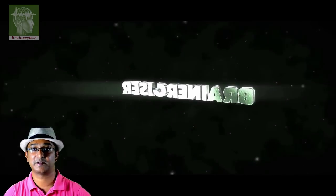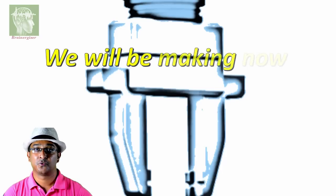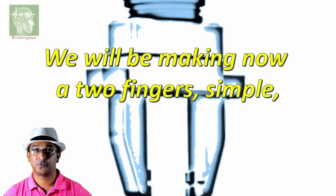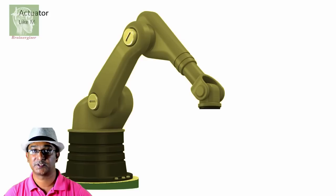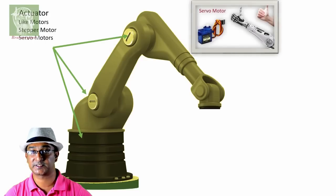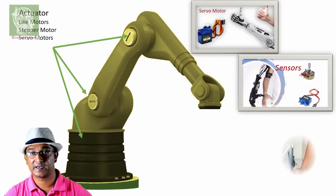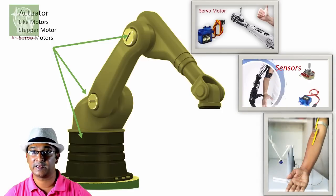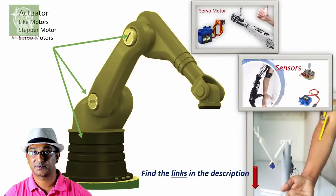Hi friends, welcome to Channel Brainergiser. We will be making now a two-finger simple, easy to make gripper. So this is the robotic arm. We have talked about actuators which is nothing but servo motors or stepper motors. We have learned how to use sensors, we've made such kind of robots. All the links you can find in the description below, check those.